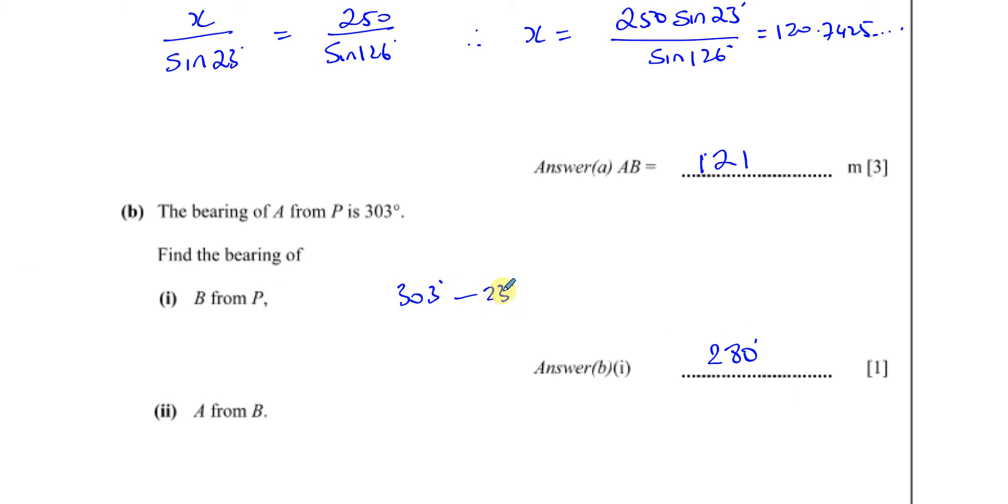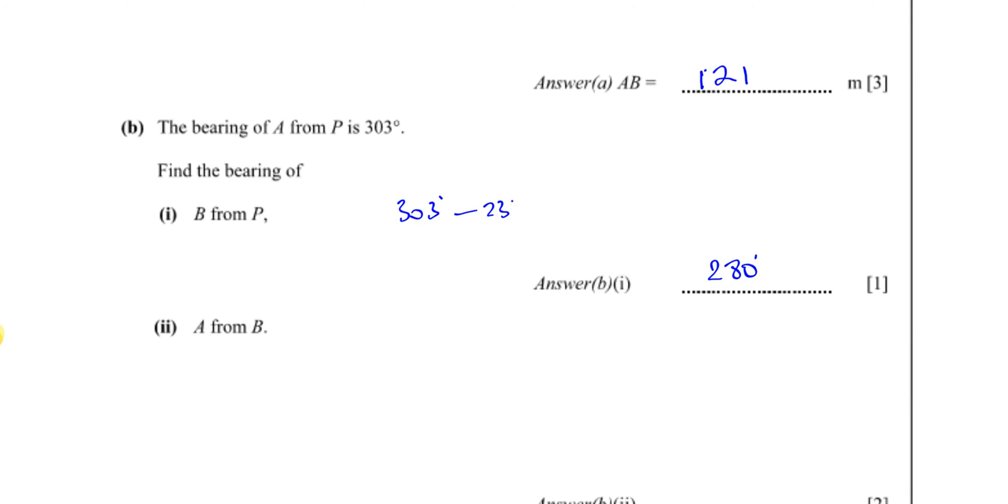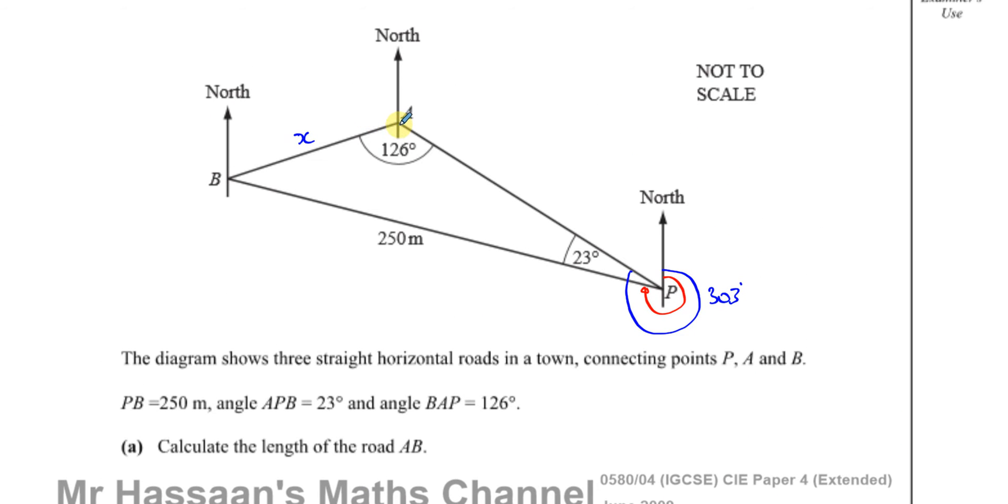That's the answer to B part 1. Then it asks for the bearing of A from B. This is the angle we have to find. To find this angle, the easiest way is to find this angle here first.